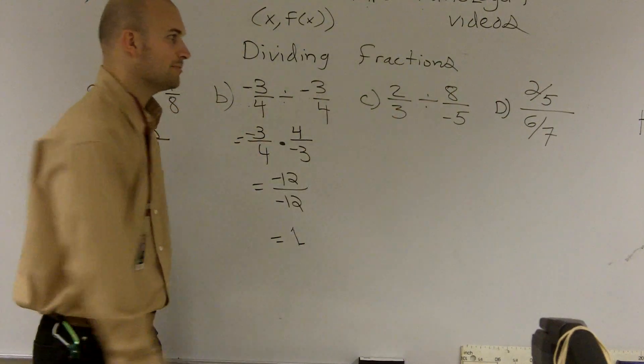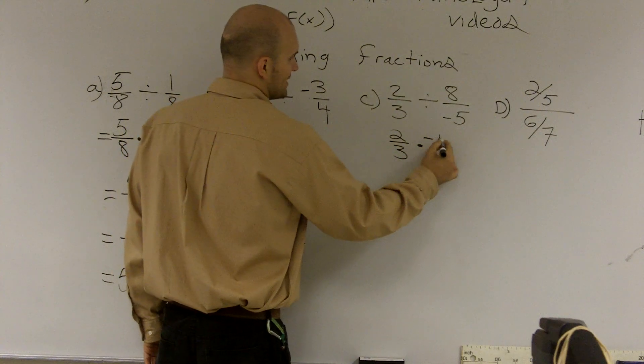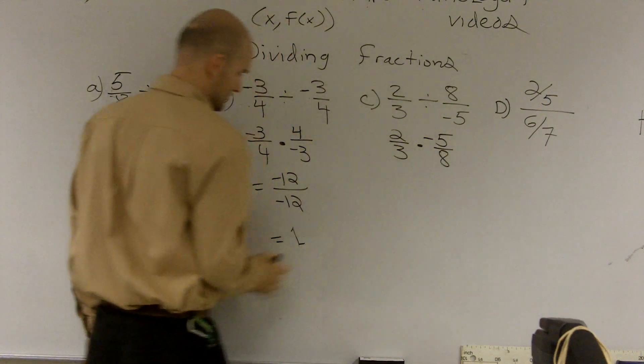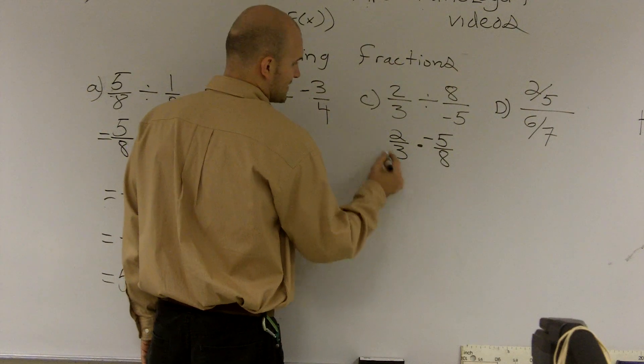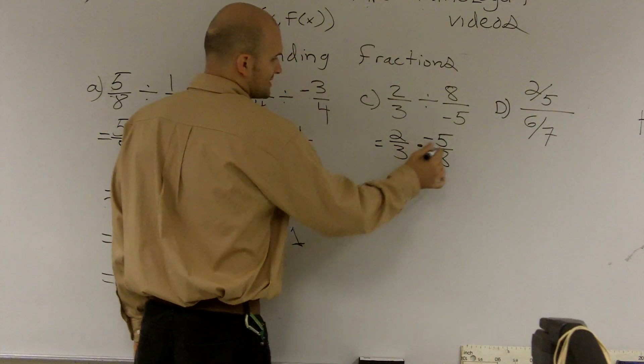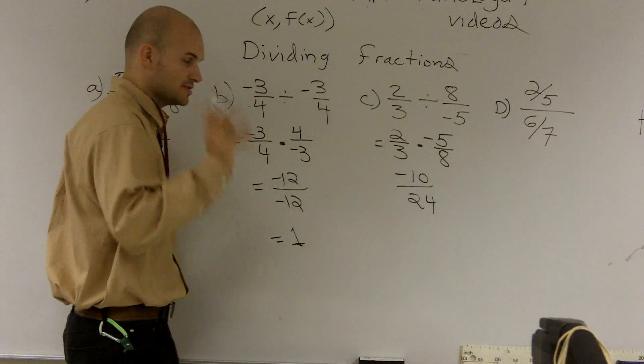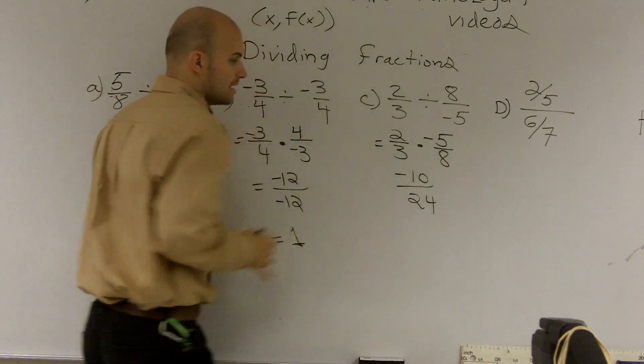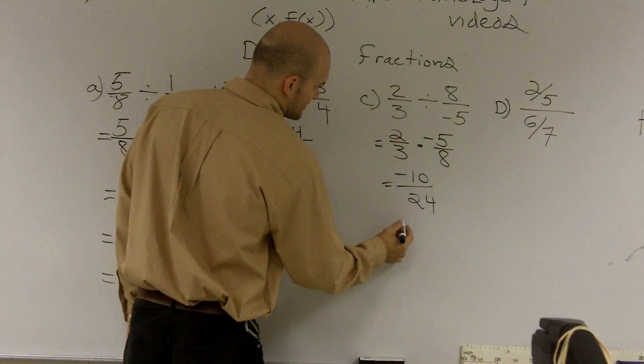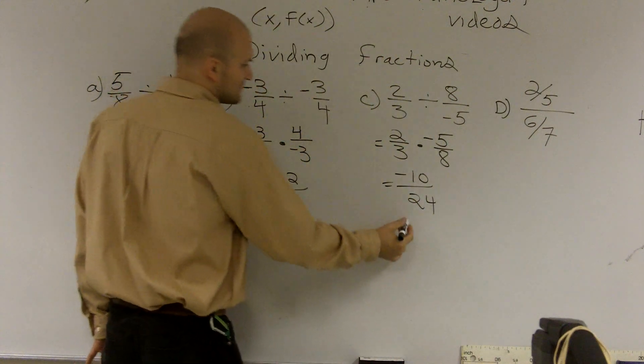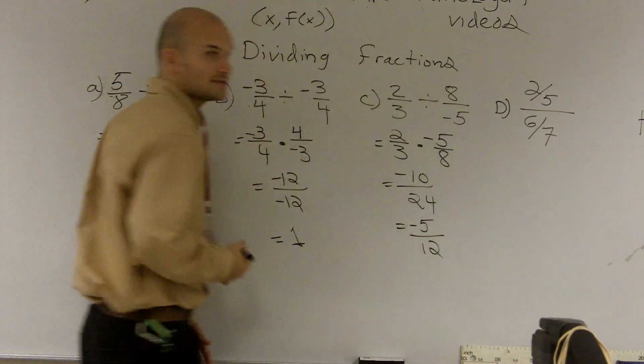Over here, I'm going to kind of speed this up a little bit. 2/3 divided by -5/8. 2 times -5 is -10. 3 times 8 is 24. We can reduce this. You can divide the top and bottom by 5 or by 2. So divide 2 out of -10. You're left with -5. And divide 2 out of 24 and you get 12.